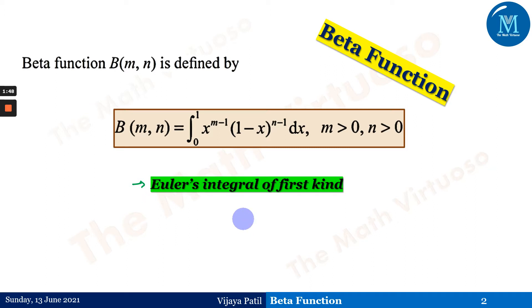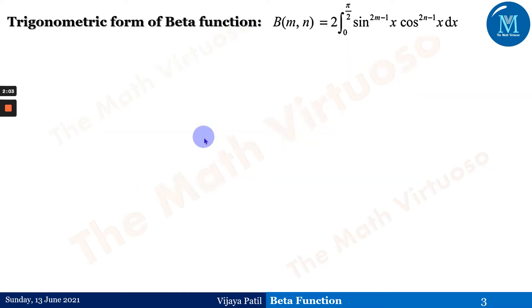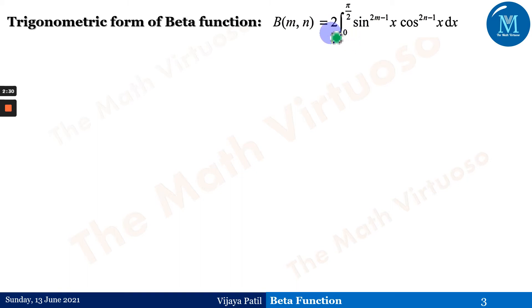We'll be going ahead in detail for the beta function. Moving forward with the trigonometric form of the beta function: beta(m, n) equals 2 times the integral from 0 to π/2 of sin^(2m-1)(x) cos^(2n-1)(x) dx. These two forms — the definition and the trigonometric form — are very useful in solving many different kinds of examples in calculus and mathematics.